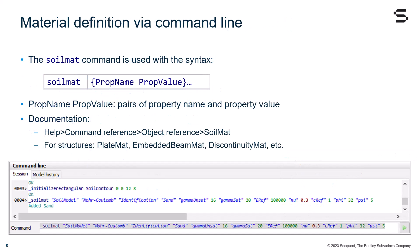Using the command line as mentioned before, we will use the soilmat command. This has the following syntax: soilmat, followed by property name and property value pairs. Note that detailed documentation can be found under Help, Command Reference, Object Reference, soilmat.